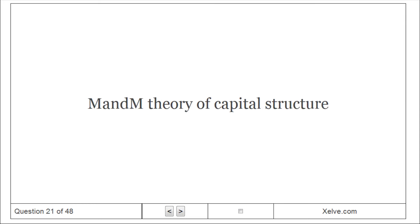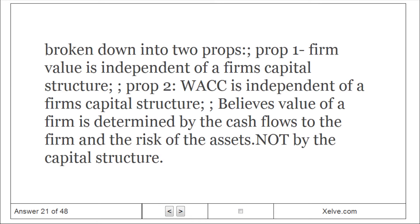The Modigliani-Miller (M&M) theory of capital structure is broken down into two propositions. Proposition 1: firm value is independent of a firm's capital structure. Proposition 2: WACC is independent of a firm's capital structure. M&M believes the value of a firm is determined by the cash flows to the firm and the risk of the assets, not by the capital structure.